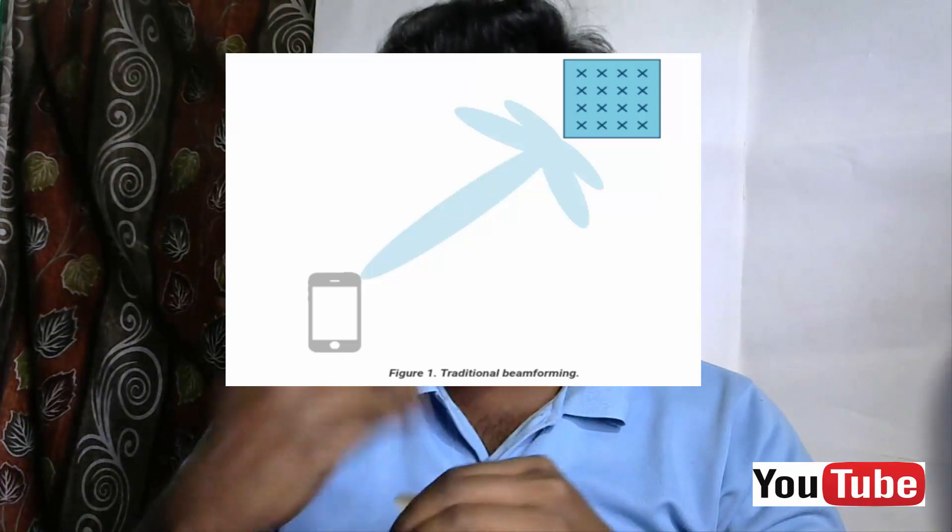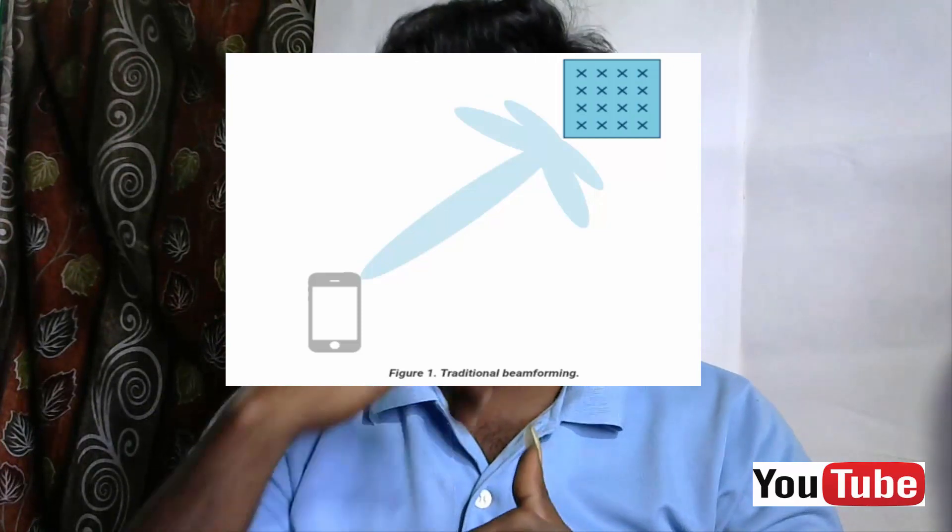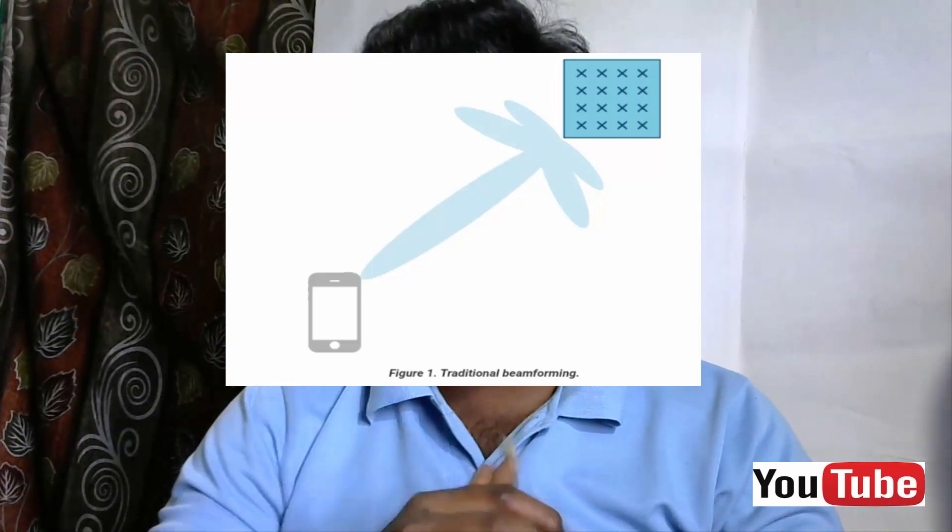The second technology is beamforming. A tower changes direction to follow your mobile. The tower uses a triangular approach — when you receive a directed signal, the beamforming technology is better than a general broadcast signal. Using beamforming, you can get the maximum speed from your data connection.